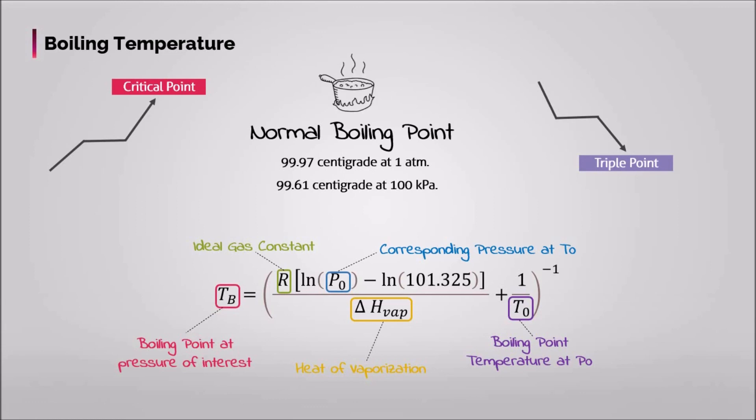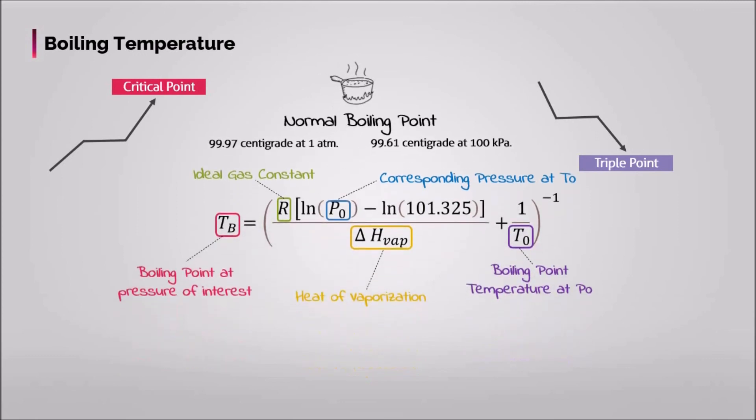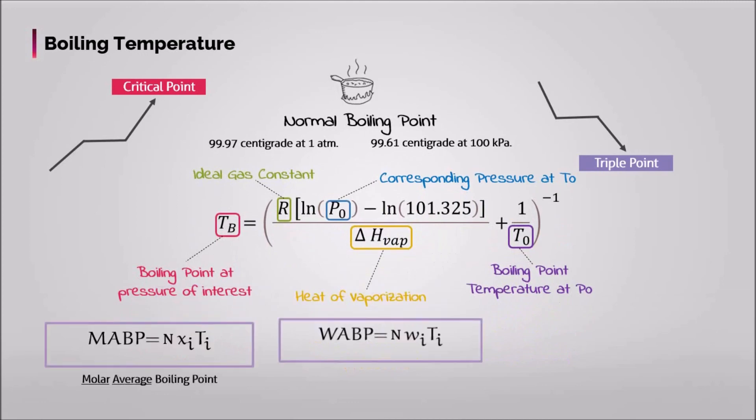One can determine average boiling point of the mixture with different methods such as molar weight, volume and etc. The equations to define average boiling point are demonstrated below.